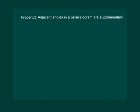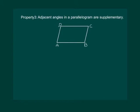The third property of parallelogram says that adjacent angles in a parallelogram are supplementary. Let us consider the parallelogram ABCD. Adjacent angles means angle A and angle B, or angle C and angle D. Also angle B and angle C are supplementary, and A and D are also supplementary.